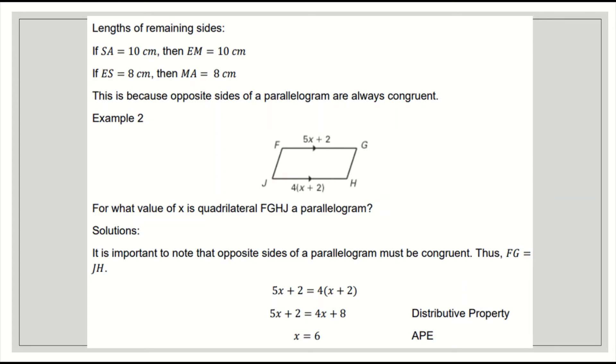Another example: For what value of x is quadrilateral FGHJ a parallelogram? For the solution, it is important to note that opposite sides of a parallelogram must be congruent. Thus, FG is equal to JH. So FG is equal to JH.